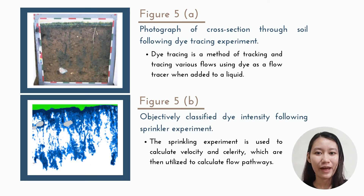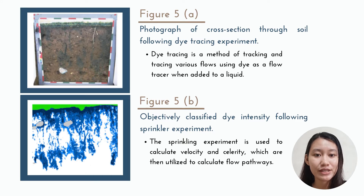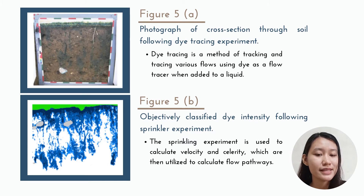Infiltration follows preferential pathways. As you can see in the first figure, it is a photograph of a soil where dye has been used to trace infiltration pathways in experiments. Dye tracing is a method of tracking and tracing various flows using dye as a flow tracer when added to a liquid. It may be used to analyze the flow of various liquids or the transport of objects within the liquid. Dye tracing experiments provide qualitative features to illustrate the flow pathways in soil and to characterize the spatial patterns of infiltrating water. Combined with laboratory and in-situ irrigation experiments, they provide a better understanding of hydrodynamic aspects of flow processes in soil.